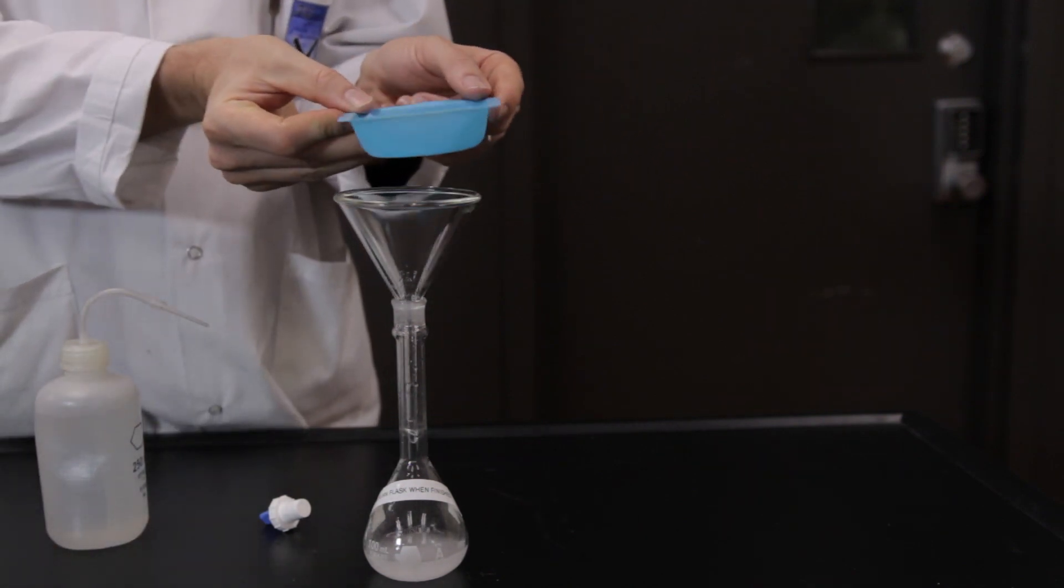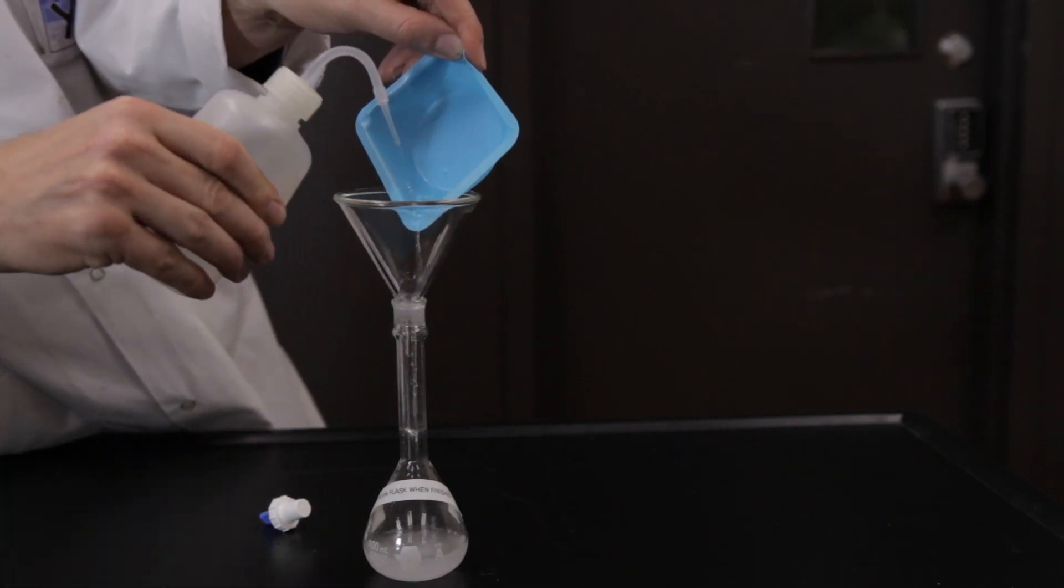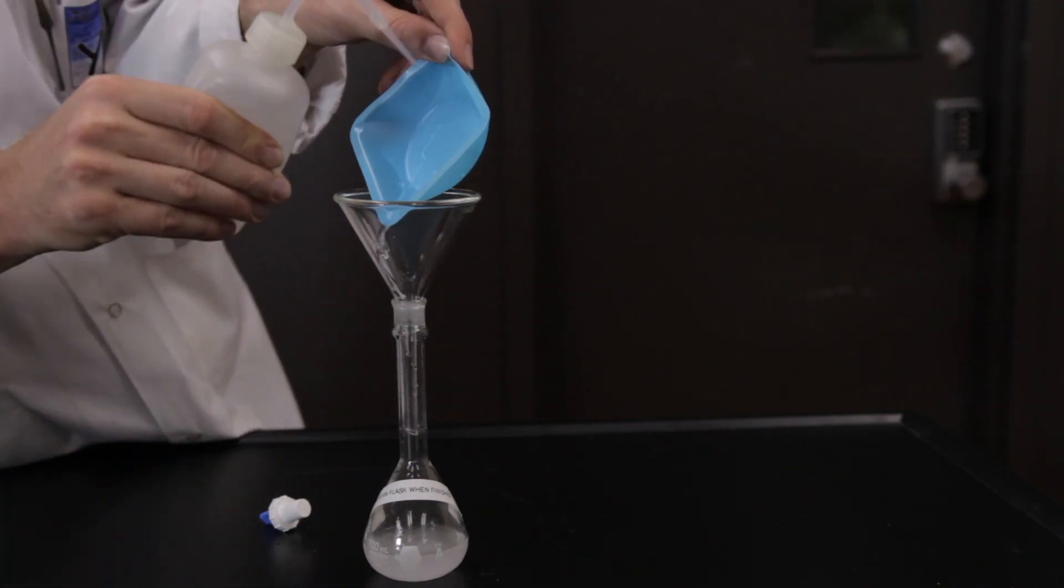Make sure to rinse the weighing dish with more water to ensure that all of the calcium chloride dihydrate has been transferred to the volumetric flask.